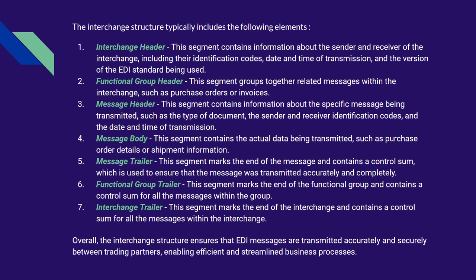Functional Group Header: This segment groups together related messages within the interchange, such as purchase orders or invoices. Message Header: This segment contains information about the specific message being transmitted, such as the type of document, the sender and receiver identification codes, and the date and time of transmission.